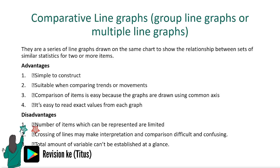A comparative line graph is a series of line graphs drawn on the same chart — we drew a line graph in Form 1. So, a comparative line graph shows the relationship between sets of similar statistics for two or more items. The advantages: it's simple to construct, suitable when comparing trends or movements, comparison of items is easy because the graphs are drawn using a common axis, and it's easy to read exact values from the graph.